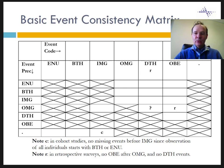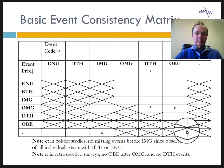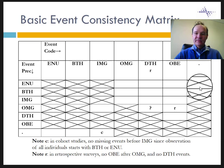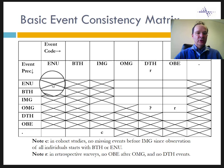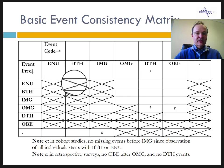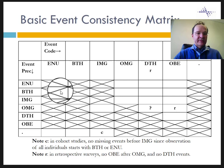You will get a matrix similar to this one. If everything is in order, the number of records should be zero in the crossed cells. For example, there should be no observations in the cell crossing ENU and ENU, because you cannot be enumerated twice. Also, you cannot be enumerated before birth, and vice versa.